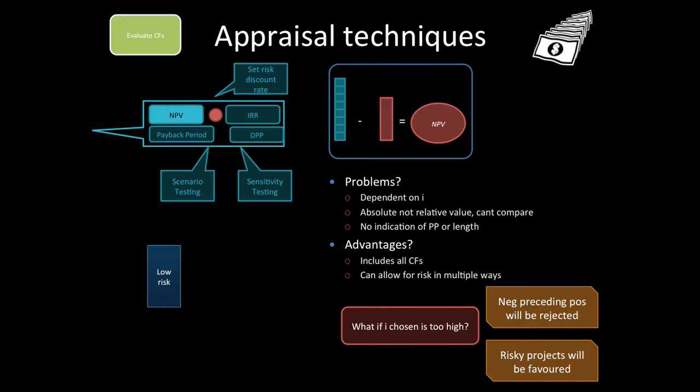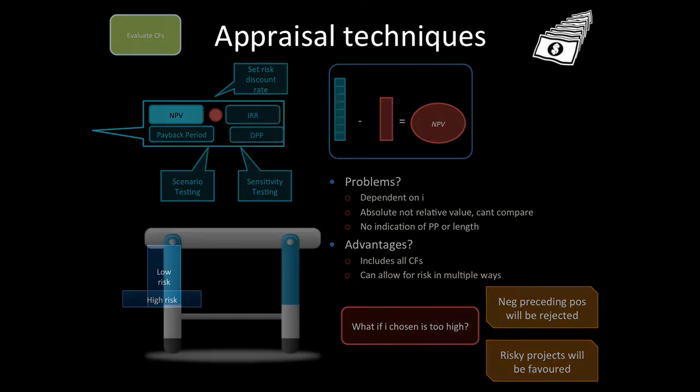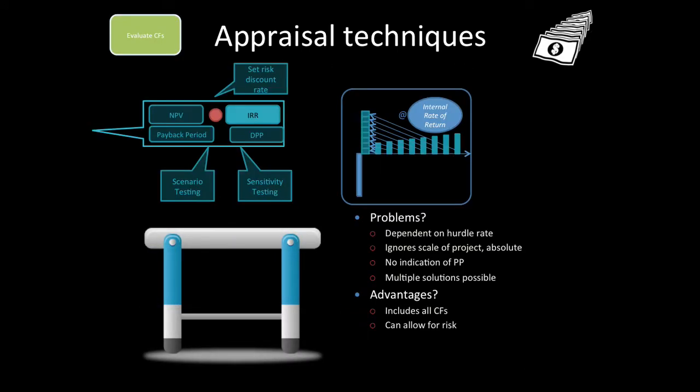For low risk, your distribution of net present value will be narrow, or for higher risk, it will be fairly spread. For the internal rate of return, it's got the problems that it depends on the hurdle rate, ignores the scale of the project, it's an absolute trigger again, and has no indication of the payback period. There are multiple solutions. Advantages: it does include all cash flows and can allow for risk. Remember, the internal rate of return is the rate that when you discount all your cash flows, the net present value will be zero.